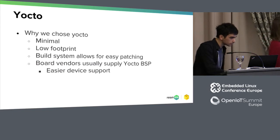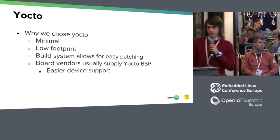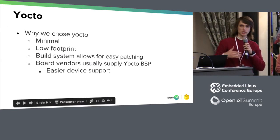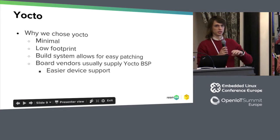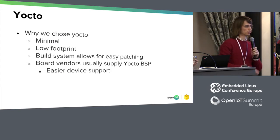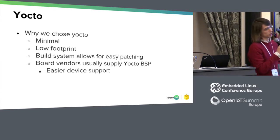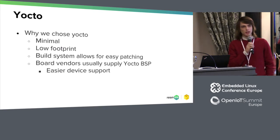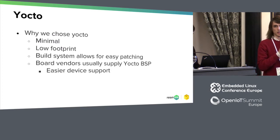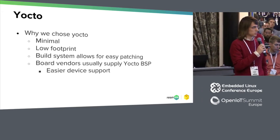Why did we choose Yocto? Our build system of choice is Yocto because it's minimal, has a low footprint, and it allows easy patching. We can stack layers and advertise them as hardware-specific or generic, and add patches specific to boards or generalized across all boards. Board vendors usually supply Yocto BSPs — it has become a unified, accepted way of delivering BSPs nowadays. Freescale does it, Allwinner does that, Raspberry Pi has community Yocto BSPs, and so on. Device support comes pretty easy.